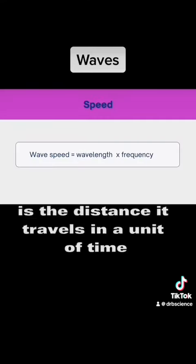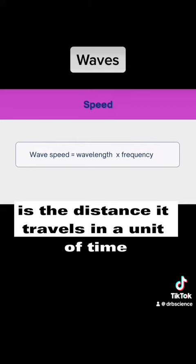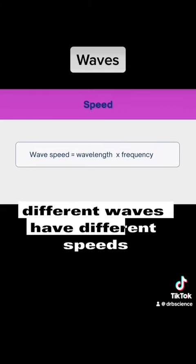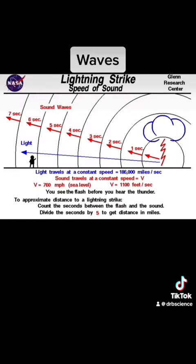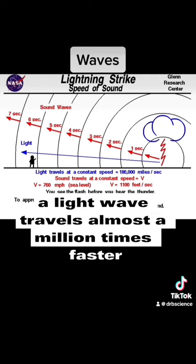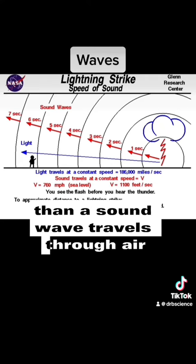The speed of a wave is the distance it travels in a unit of time. Different waves have different speeds. For instance, a light wave travels almost a million times faster than a sound wave travels through air.